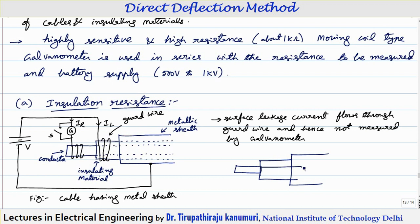There can be two current paths because this conductor is inside. Whenever you give the supply, the current can pass from the conductor through the insulation to the sheath — this current passing through the insulation I am representing as IR. There will be one more current that will pass from this conductor and leak through the surface to reach the sheath — that current I call the leakage current IL, which leaks through the surface.